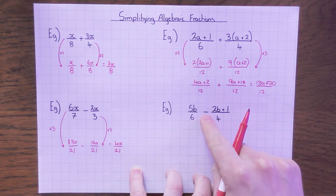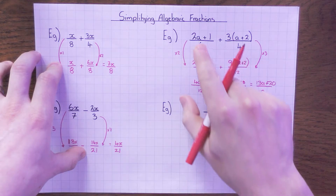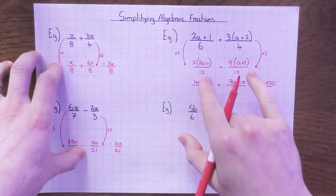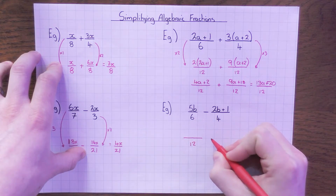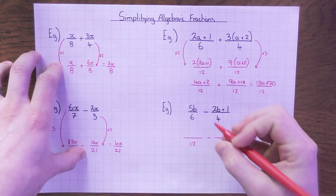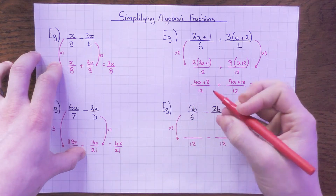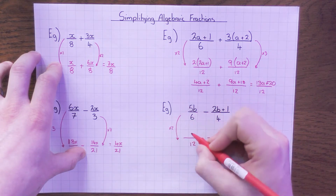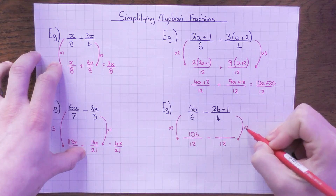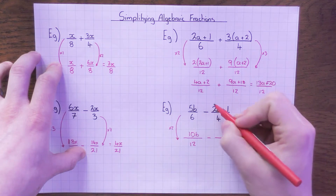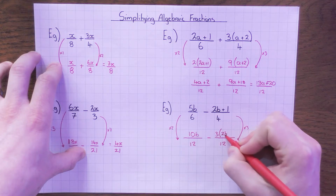No different here if we're subtracting, but you need to be a little bit careful. Different denominators — need to make them the same. It's the same thing: 6 and 4, I'm going to make them both 12. What do we do with the 6? 6 times 2 gets me 12, so I must times the top by 2 as well. So 5b times 2 is 10b. What do I times 4 by to get to 12? I times that by 3, just like above. So that's going to be 3 times the bracket (2b + 1).